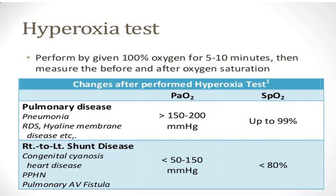In the hyperoxia test, if the cause is pulmonary disease such as pneumonia, RDS, or other pulmonary causes, the partial pressure of oxygen mainly rises above 150 mmHg. Whereas if there is a right-to-left shunt, it remains less than 150 mmHg.